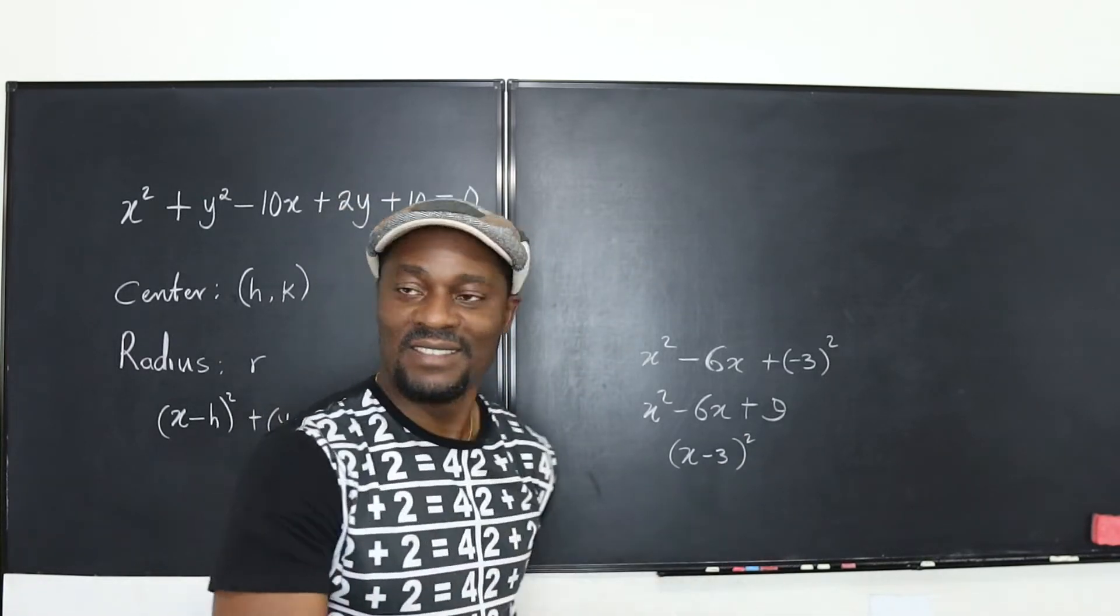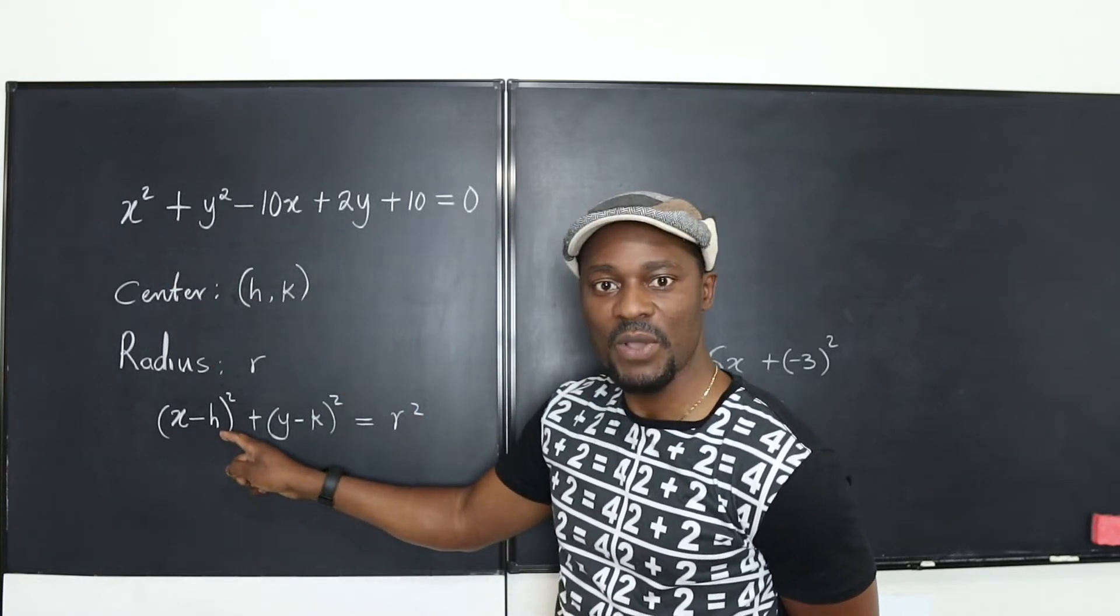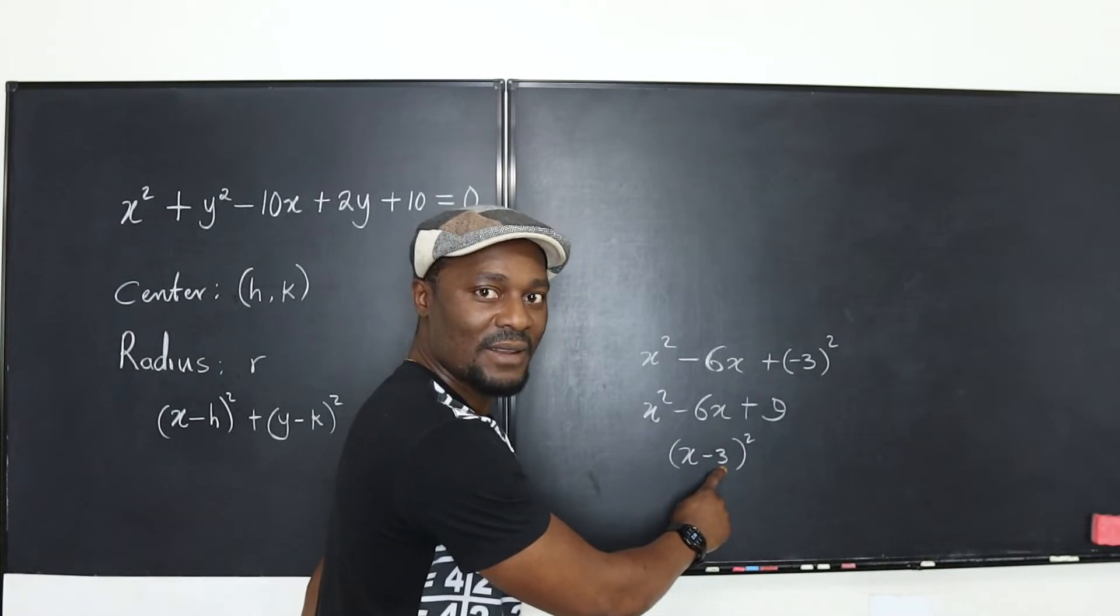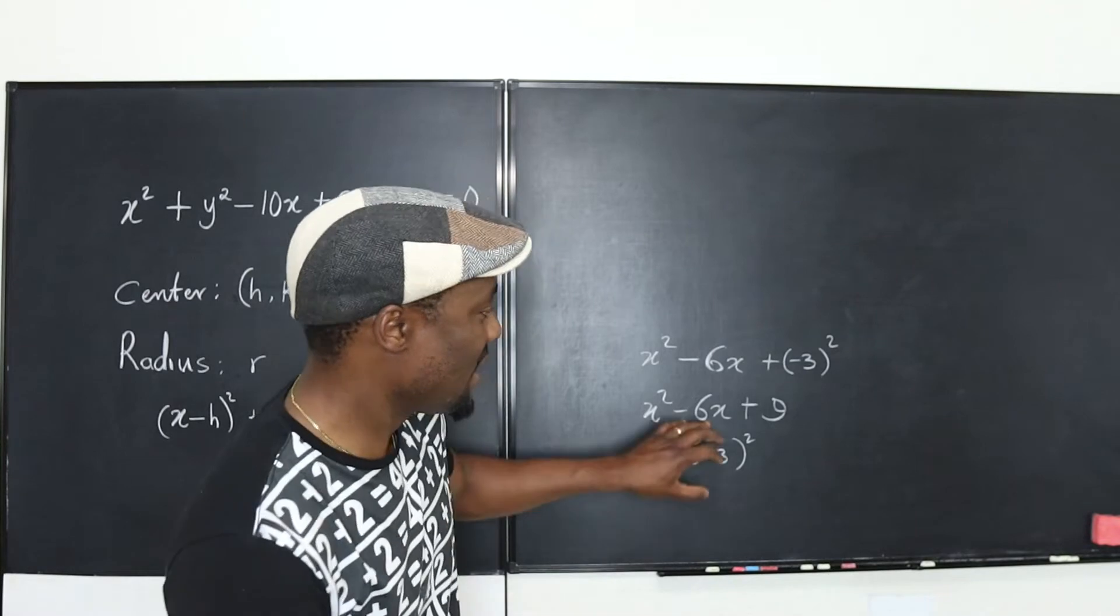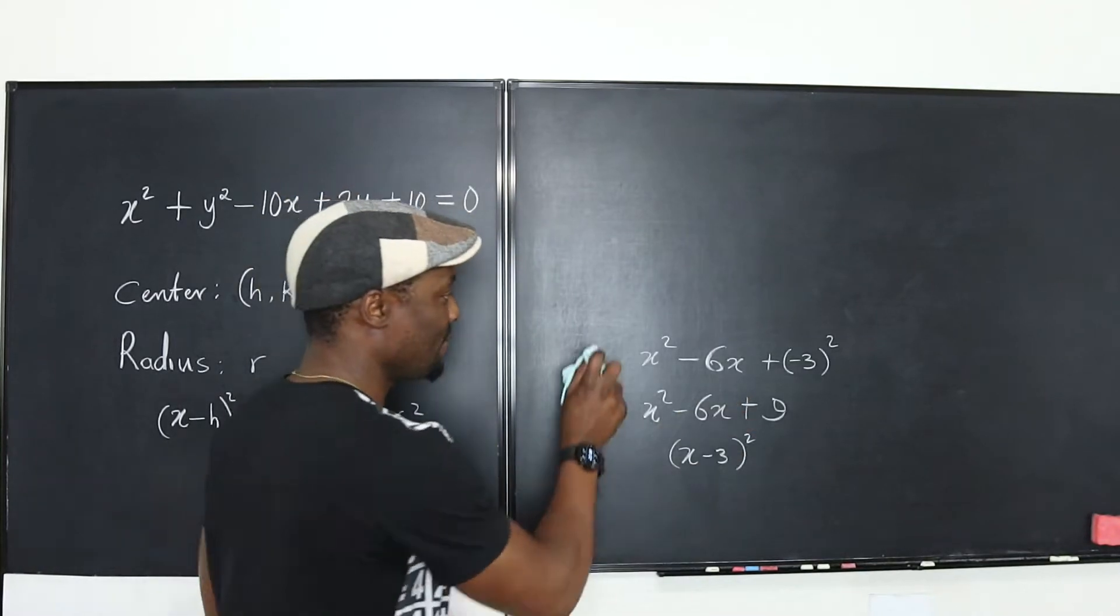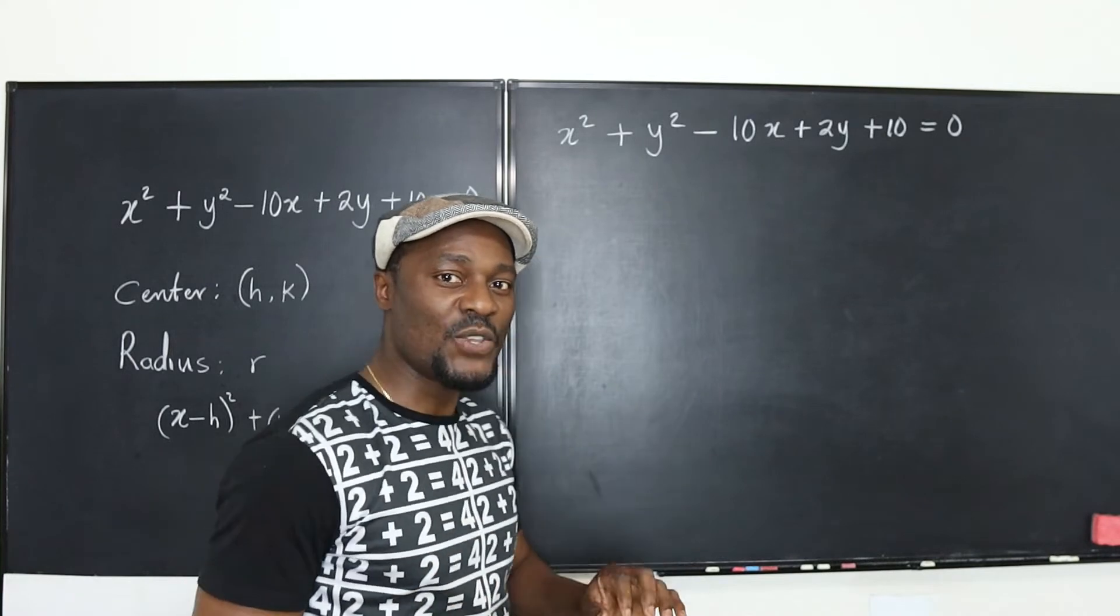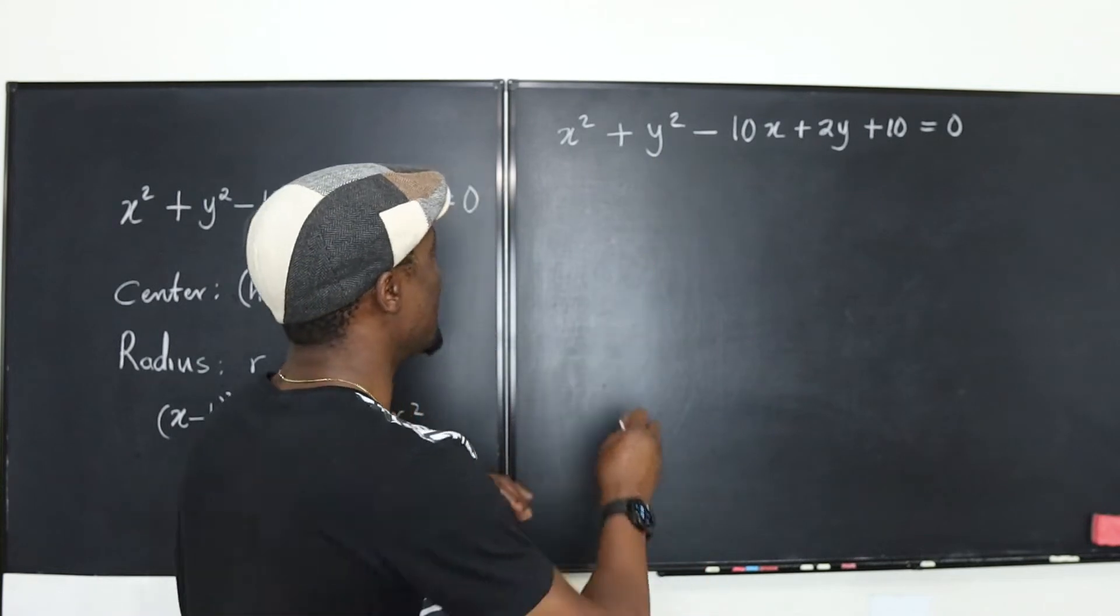We need this skill to transform the equation. You see now we can tell what the center is. If this was our problem, we know the center is 3. Let's apply this to the actual problem. You can do completing the squares for both the x² and y² terms.